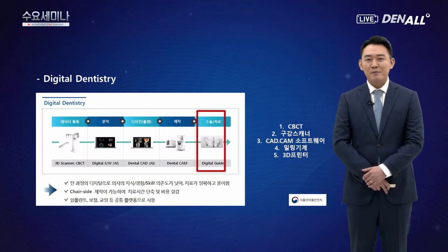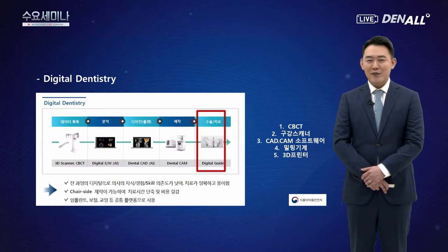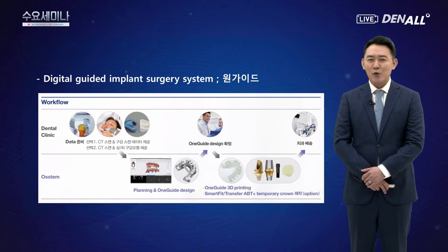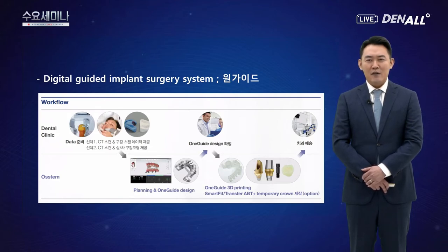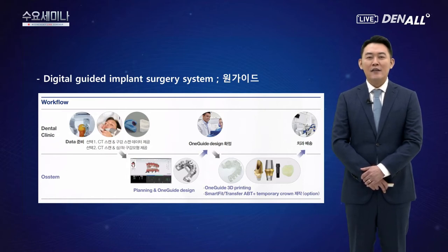식약처 자료에 따르면 디지털 가이드는 CT 데이터를 받아 소프트웨어로 분석 및 플랜을 짜고, 3D 프린터로 가이드를 제작하여 가이드를 이용한 수술이 가능하게 됩니다. 원가이드에서 데이터 획득은 CT 스캔 및 구강 스캐너를 이용한 스캔이며, 분석 및 디자인은 원가이드 센터에서 치과사와 긴밀한 커뮤니케이션 하에 결정됩니다. 가이드 제작은 원가이드 센터 제작 시 폴리젯 타입, 치과 자체 제작 시 DLP 타입의 3D 프린터로 제작됩니다.